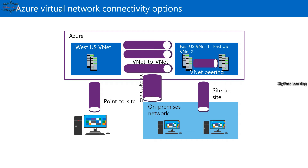From this diagram, you can see VNet-to-VNet connectivity, where you have multiple Microsoft Azure sites connecting to each other. Your on-premises environment connects to your Azure network via ExpressRoute. With site-to-site connectivity, you can create a tunnel between your on-premises network and the Azure network.